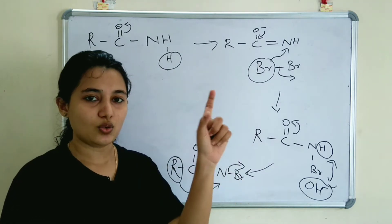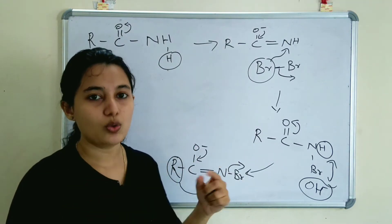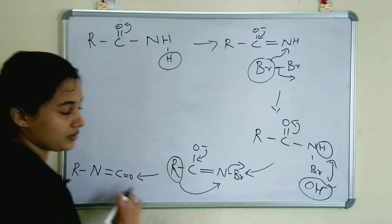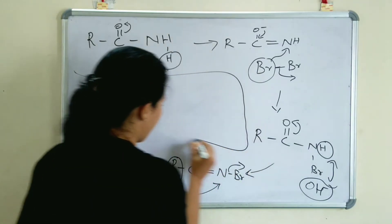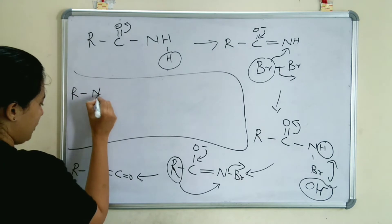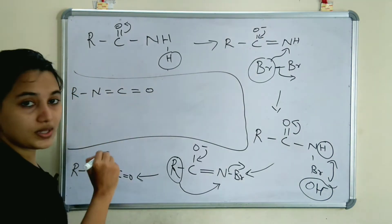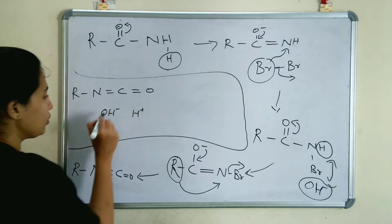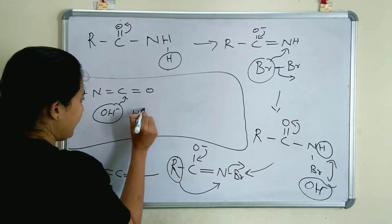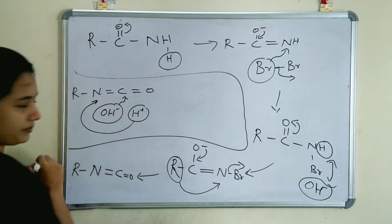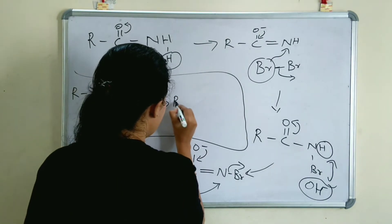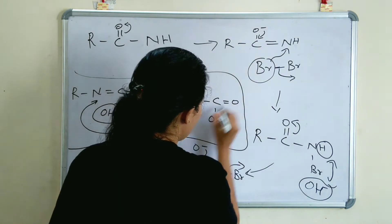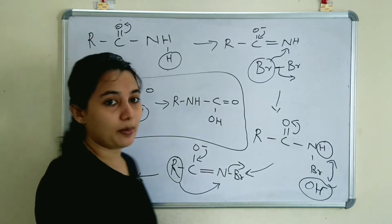The isocyanate intermediate is then hydrolyzed. Water is added: OH⁻ attacks the carbon and H⁺ attacks the nitrogen. This gives R-NH-C(=O)-OH (carbamic acid).